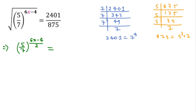In place of 2401 I will write 7^4, and in place of 875 I will write 5^3 × 7. The 7s cancel, so we can write 7^3 / 5^3, which means (5/7)^((6x-4)/2) = (7/5)^3.